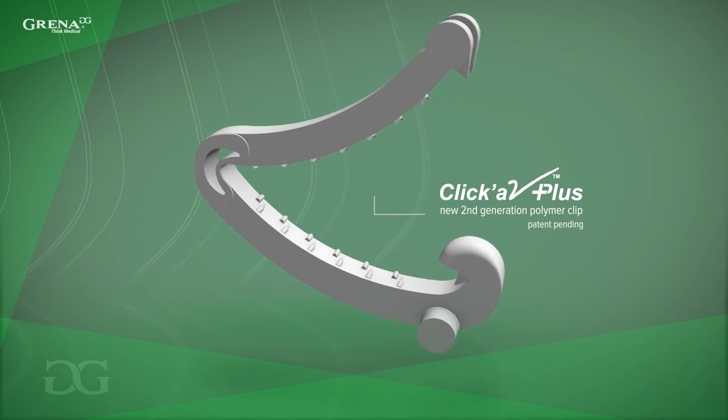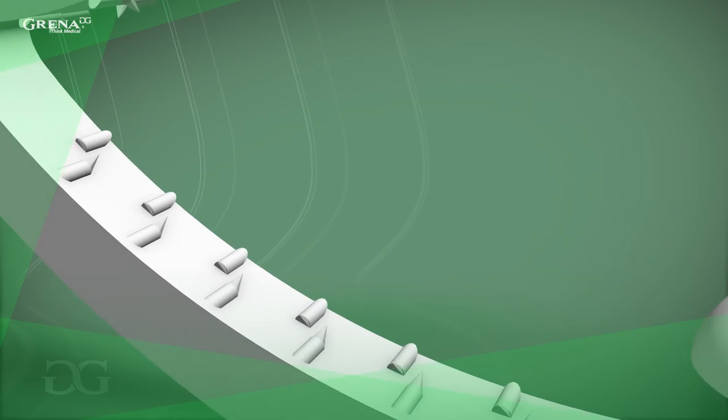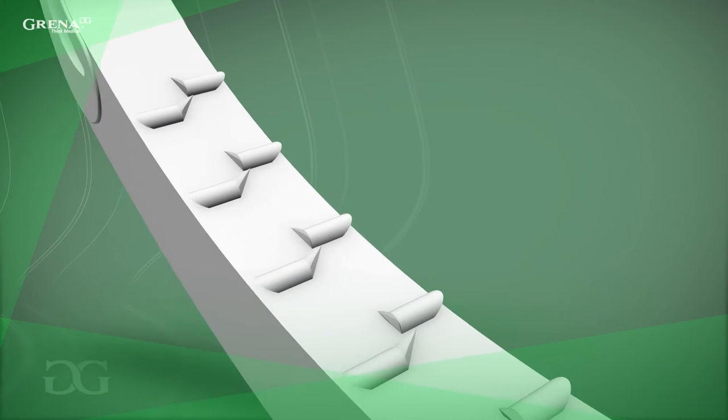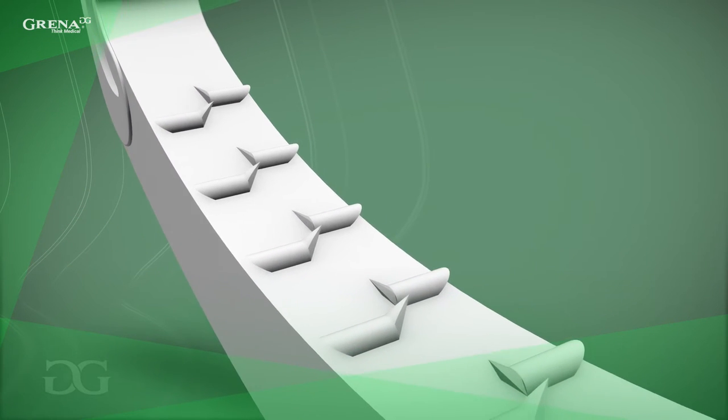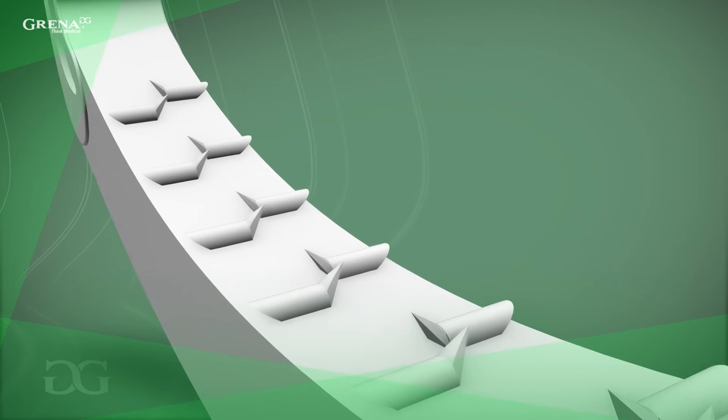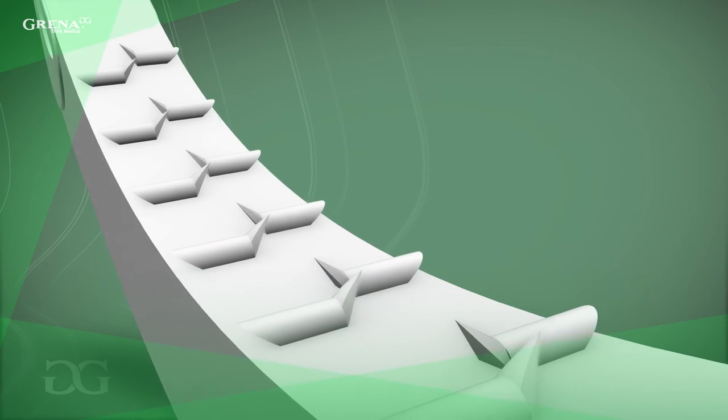The new ClickaV Plus is the only product on the market with a specially developed two-way staggered teeth arrangement which is set in opposite directions. With optimal height in respect to the size of the clip, it guarantees increased transverse stability.